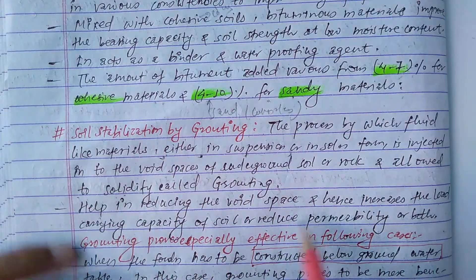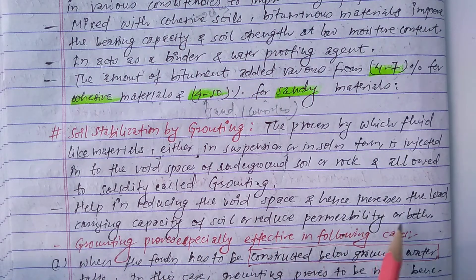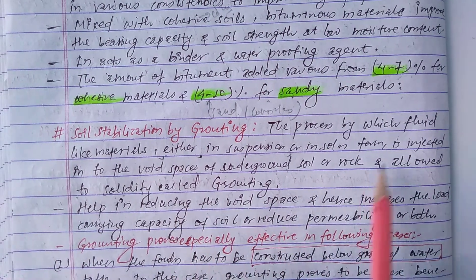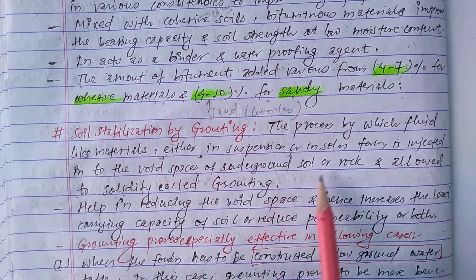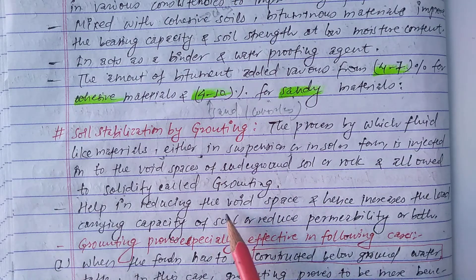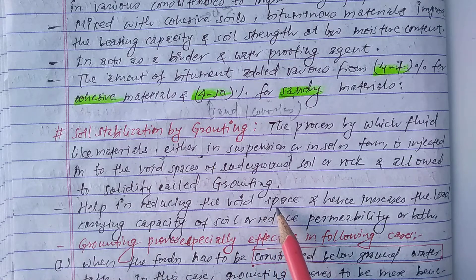Grouting helps in reducing the void space and hence increases the load carrying capacity of soil, or reduces permeability. This is how grouting improves the soil.